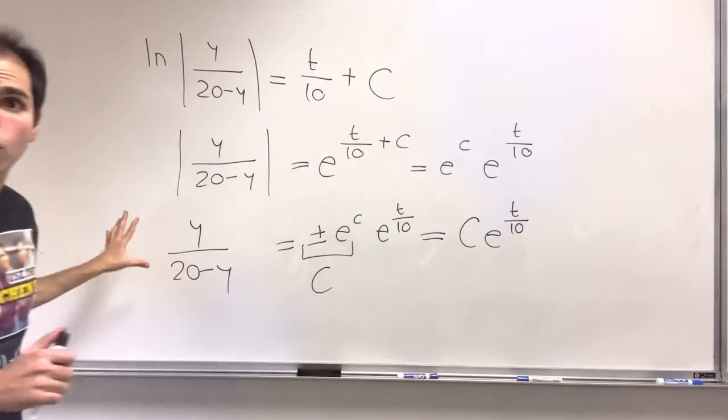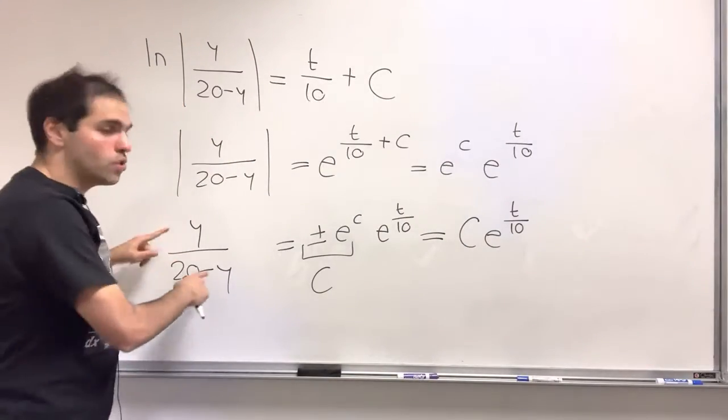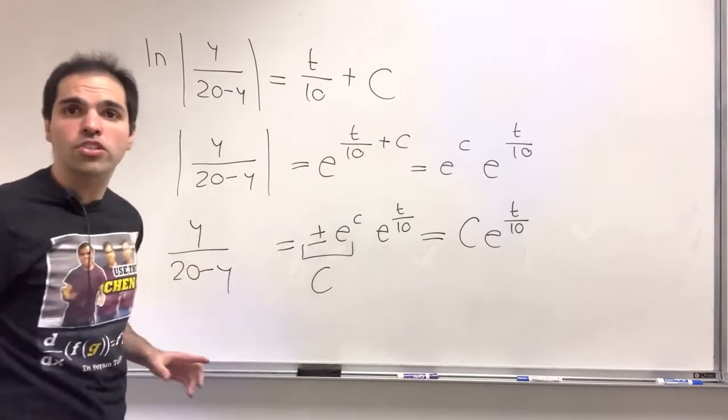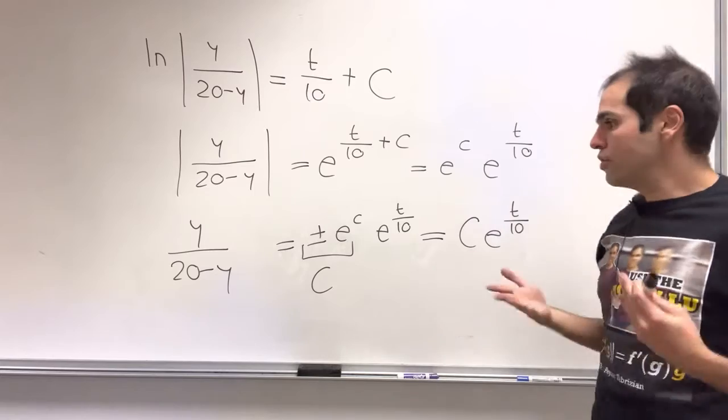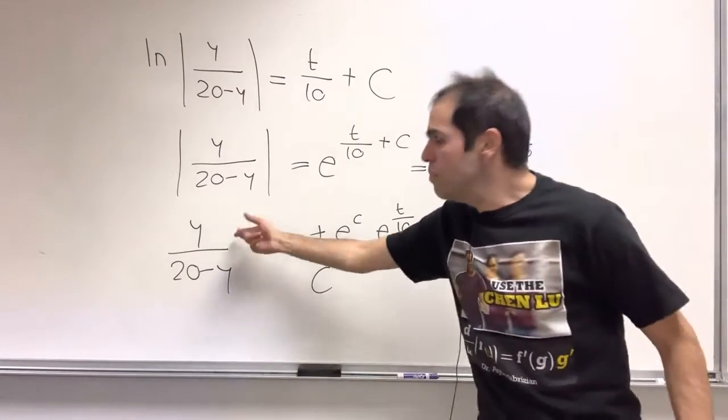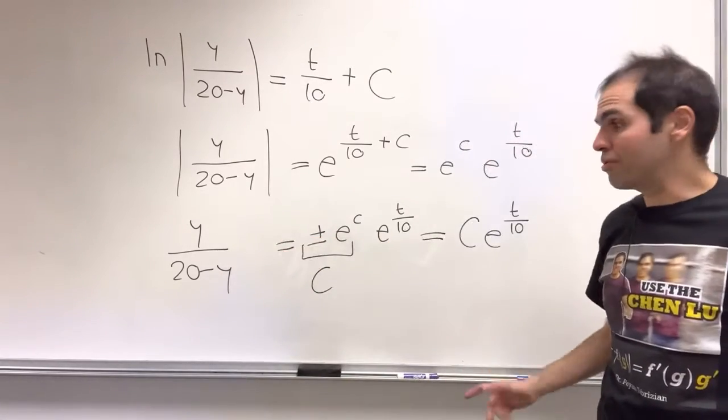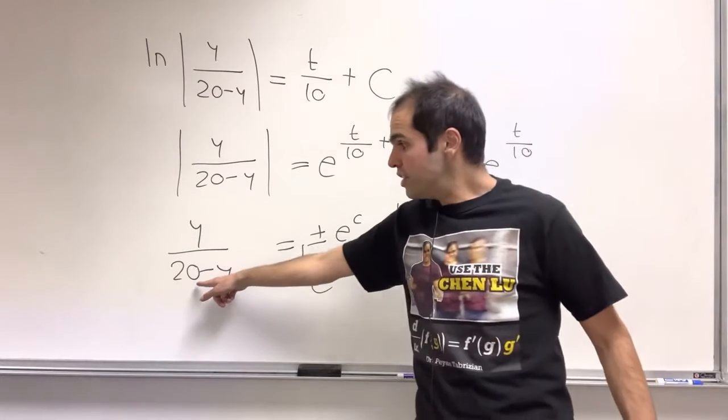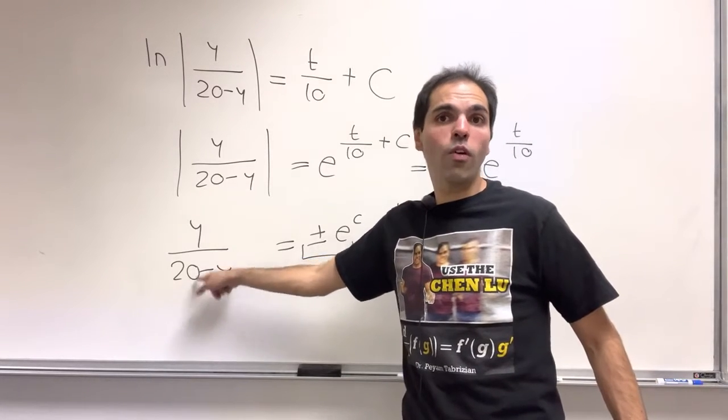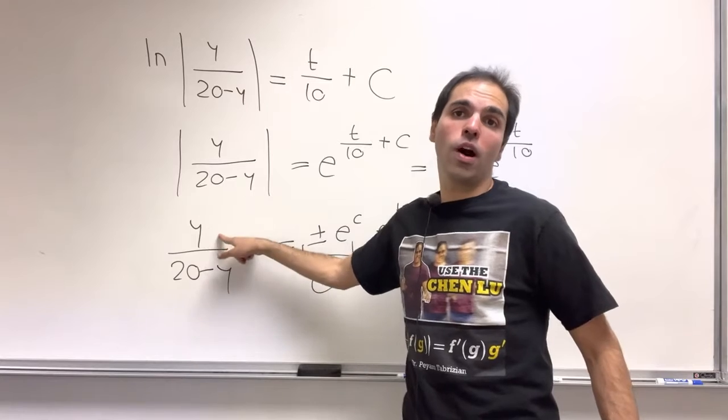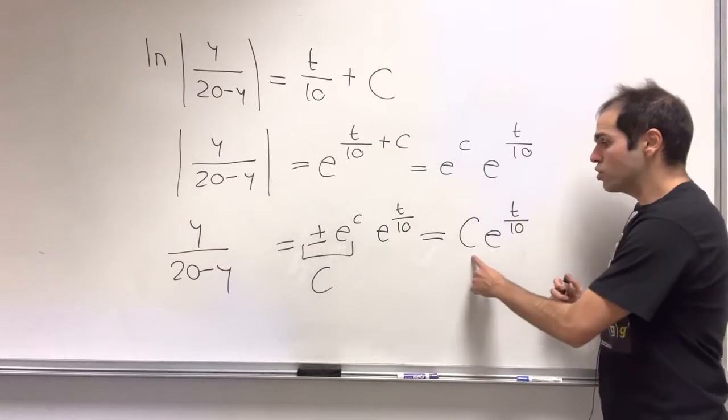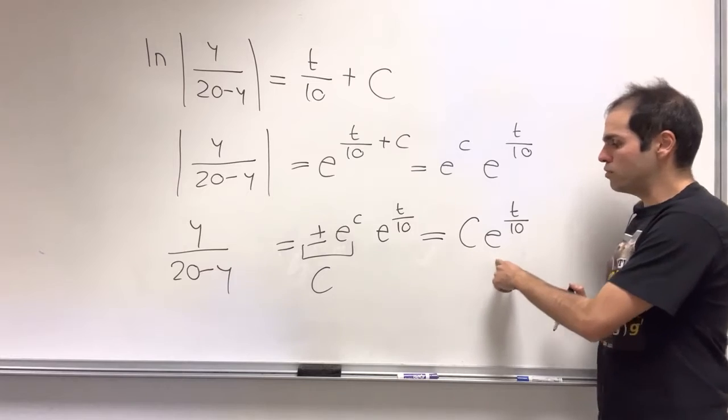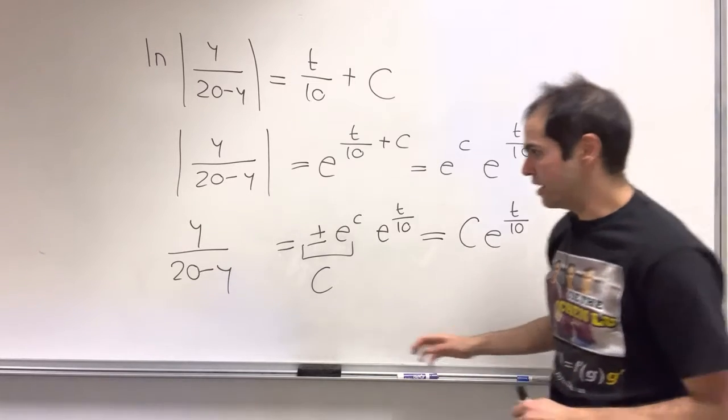Now, you could solve for y in this equation by cross multiplying. But it turns out, as you'll see in a second, it's much easier to take reciprocals. Because if you take the reciprocal here, you get 20 over y, 20 minus y over y. If you take reciprocals here, you just have 1 over c times e to the minus t over 10.